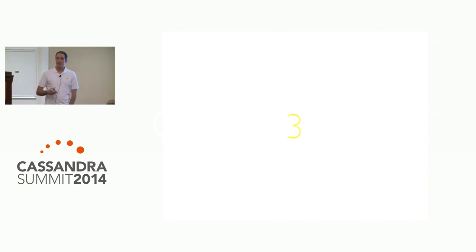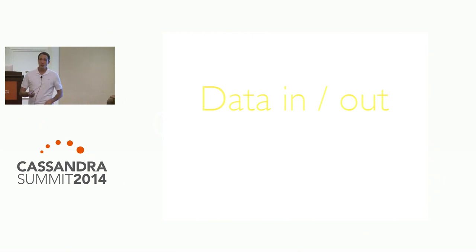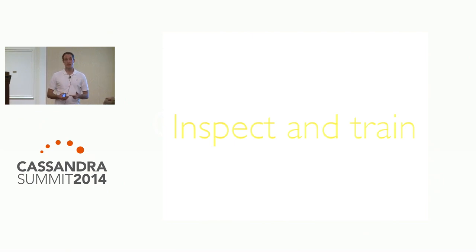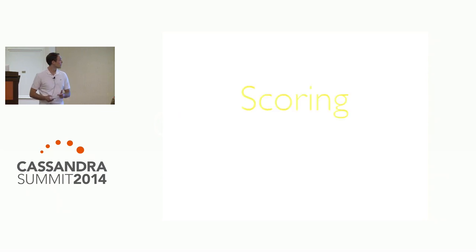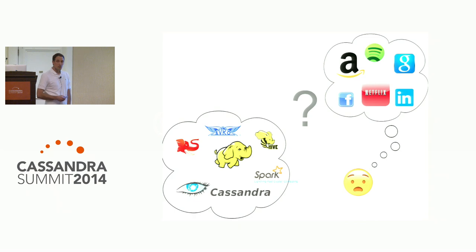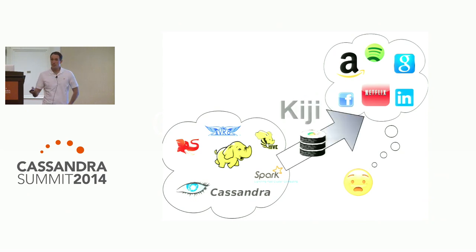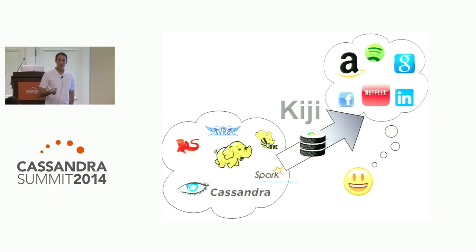To review, there are three main types of functionality needed in this kind of application: first, getting data in and out of Cassandra via REST; second, giving the data science team tools to inspect data and train machine learning models; and third, scoring or applying those models, especially in real time. It was with this gap in mind — between proven open source tools and the finished application — that we at WibiData developed the Kiji project, an open source platform to avoid reinventing the wheel so developers can focus on what makes their application unique.